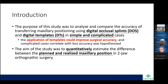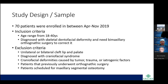The aim was to quantitatively estimate the difference between the planned and realized maxillary position in two-jaw orthognathic surgery. A total of 70 patients were enrolled. Inclusion criteria were age 18 to 40 years, diagnosed with skeletal-dental facial deformity requiring orthognathic surgery. Exclusion criteria included unilateral or bilateral cleft lip and palate, craniofacial syndrome, deformity caused by tumor, trauma, or iatrogenic factors, prior orthognathic surgery, or scheduled maxillary segmental osteotomy.